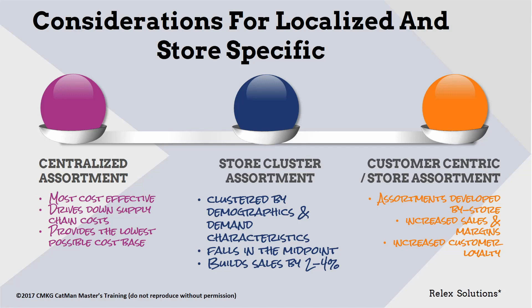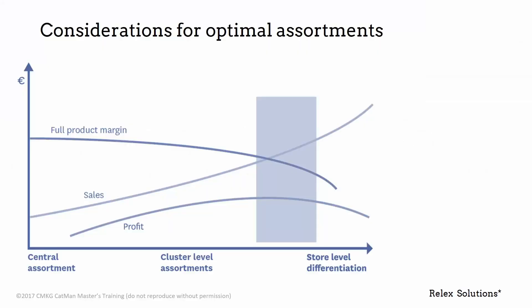Many retailers have increased sales by two to four percent through intelligent assortment differentiation without the need to build store-level assortments. As we've established, centralized assortment delivers the highest fully cost-loaded product margin while store-level drives up costs and reduces margin. The point where profits are maximized is reached when the increasing costs of differentiation start to outweigh the impact of increased sales margins that would be achieved through further differentiation.